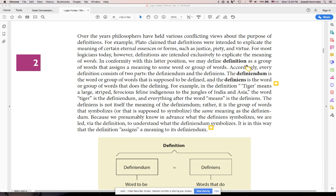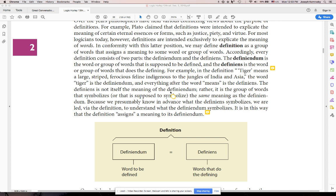Accordingly, every definition consists of two parts. This is the distinction I want you to get. You can see it below here too. Two parts, the definiendum and the definiens. The definiendum is the word or group of words that is supposed to be defined. And the definiens is the word or group of words that does the defining. For example, in the definition tiger means a large striped, ferocious feline, indigenous to the jungles of India and Asia, the word tiger is the definiendum.